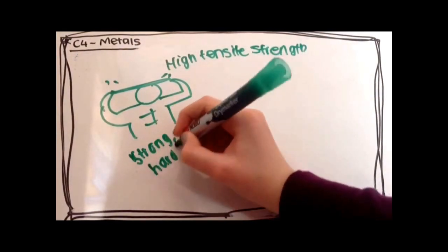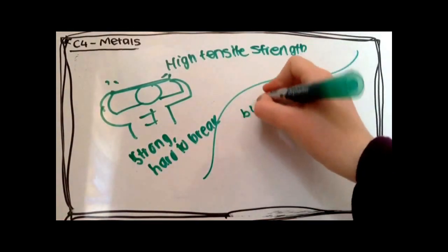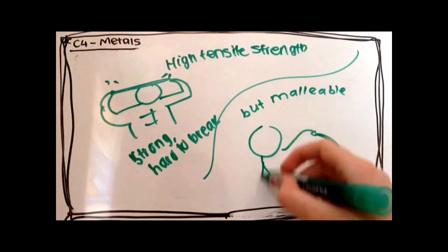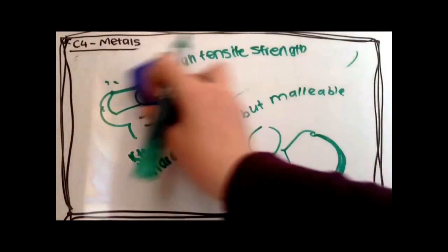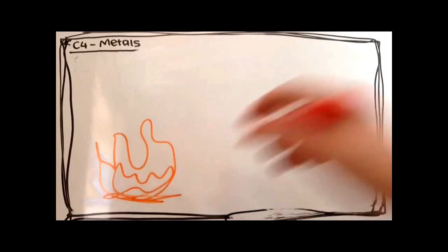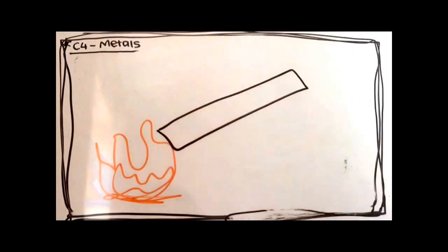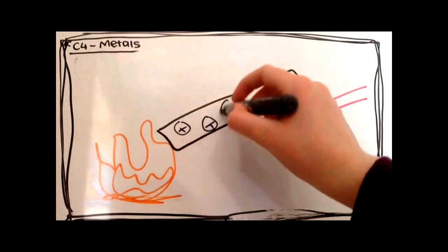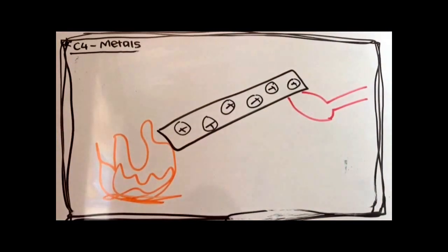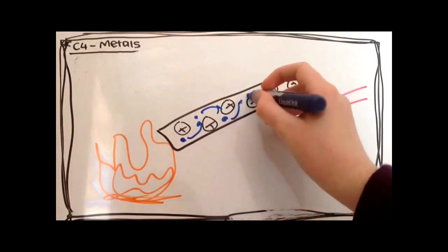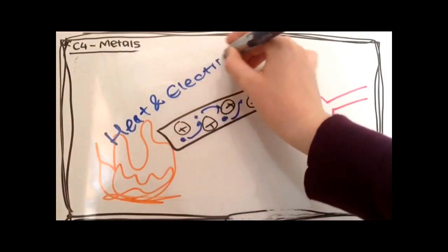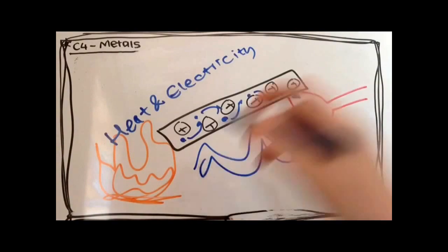Metals have a high tensile strength, which basically means that they're strong and hard to break. But they're also malleable, which means they can be hammered into a different shape. Metals are good conductors of heat and electricity, and this is entirely due to their sea of delocalised electrons, which move freely through the metal carrying the electrical current. They can also carry heat energy and electrical energy.